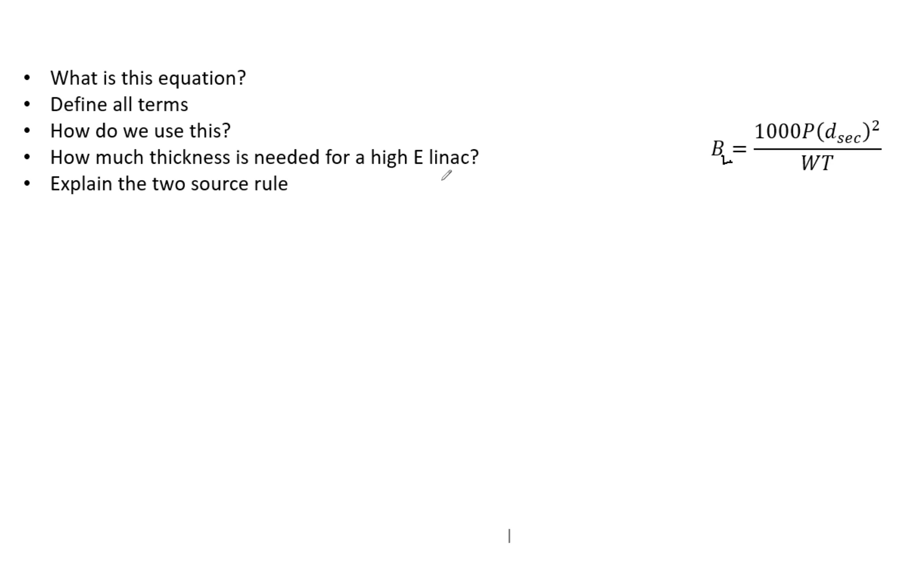And so now let's define all the terms. So we have 1000. Thankfully, this clues us in immediately that we know this is leakage. And the reason we know 1000 really helps us is because linear accelerators are required to attenuate the head leakage to 0.1% of the primary beam. So that's why we have 1000 in here. If you see 1000, you know immediately that is leakage.